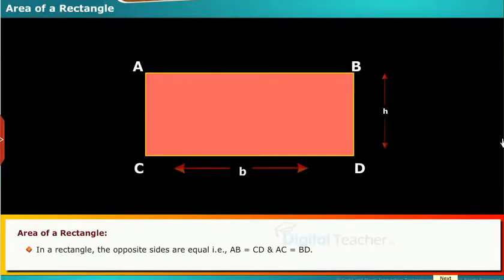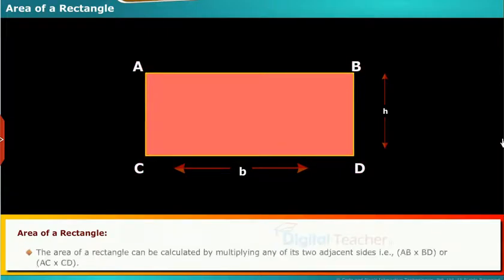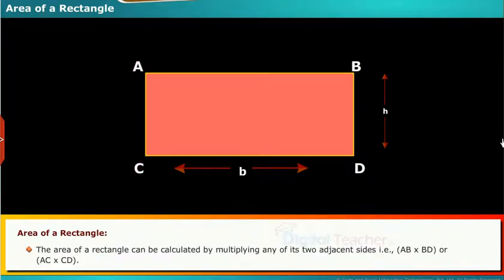Area of a rectangle. In a rectangle, the opposite sides are equal. That is, AB is equal to CD and AC is equal to BD.